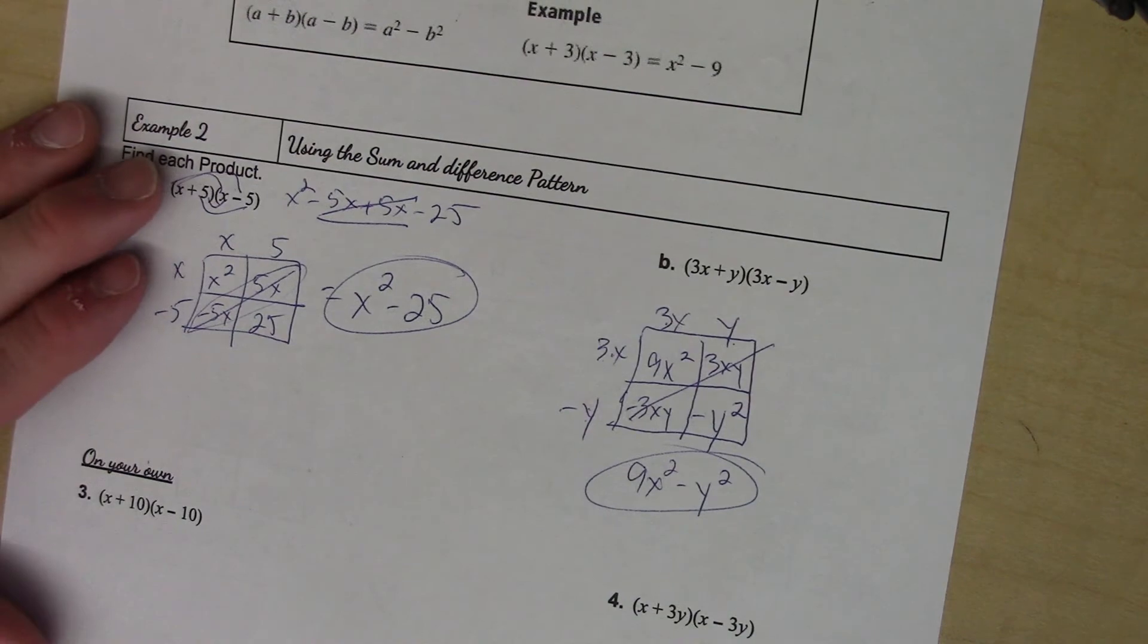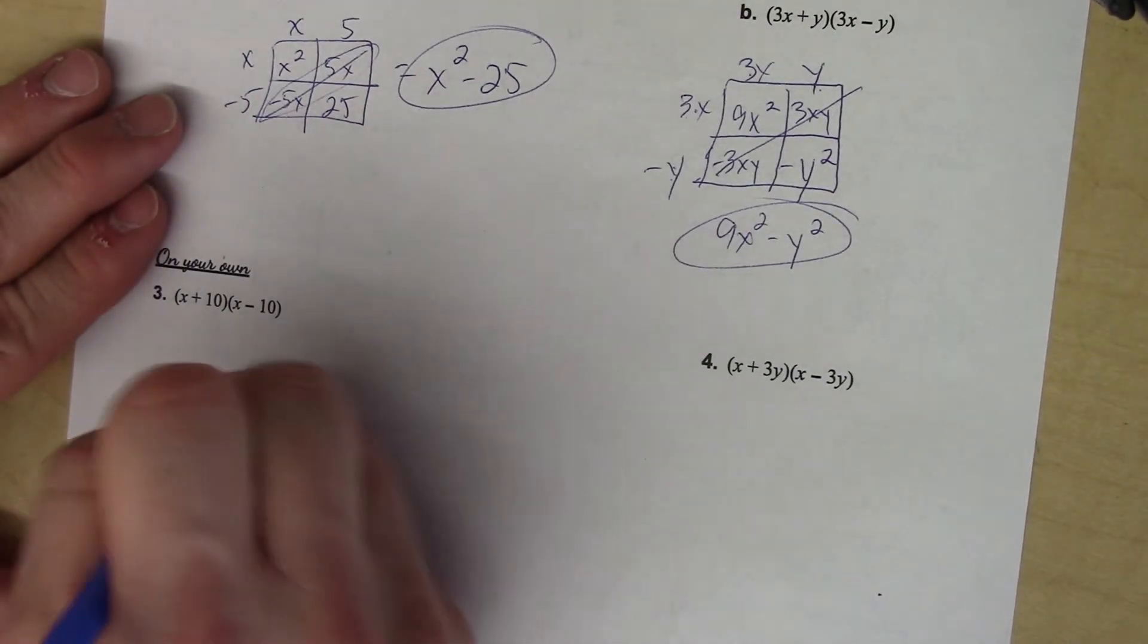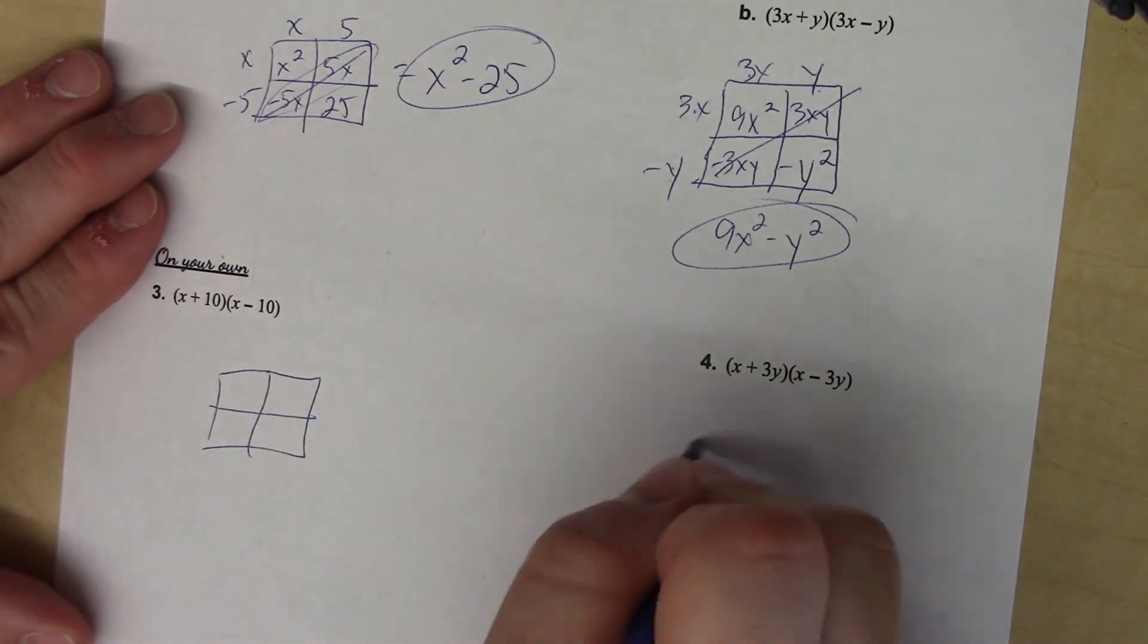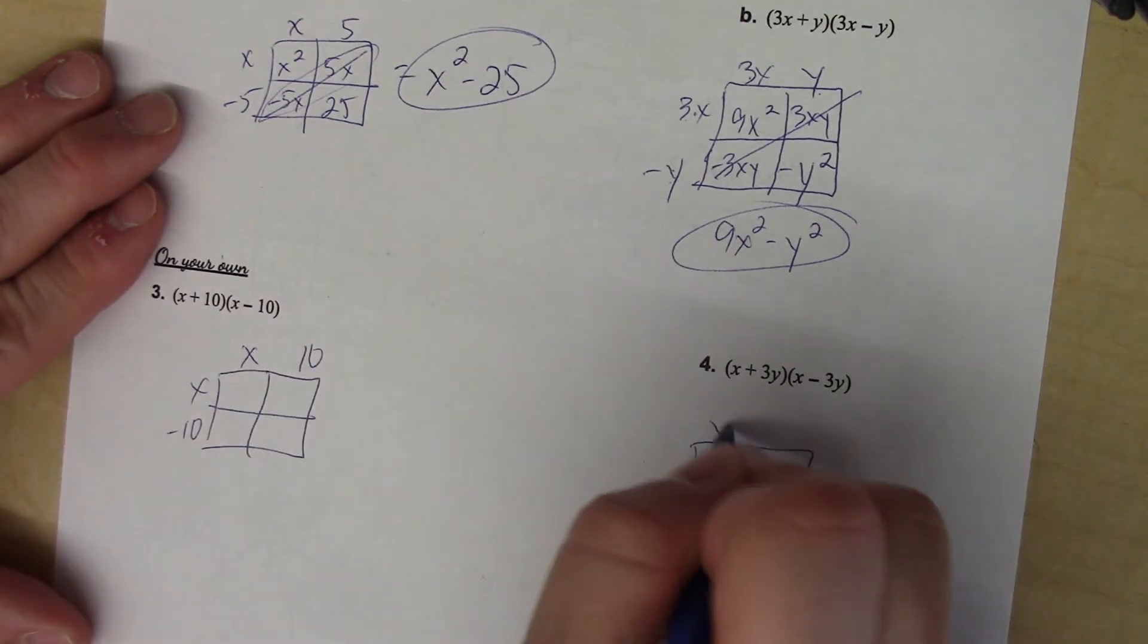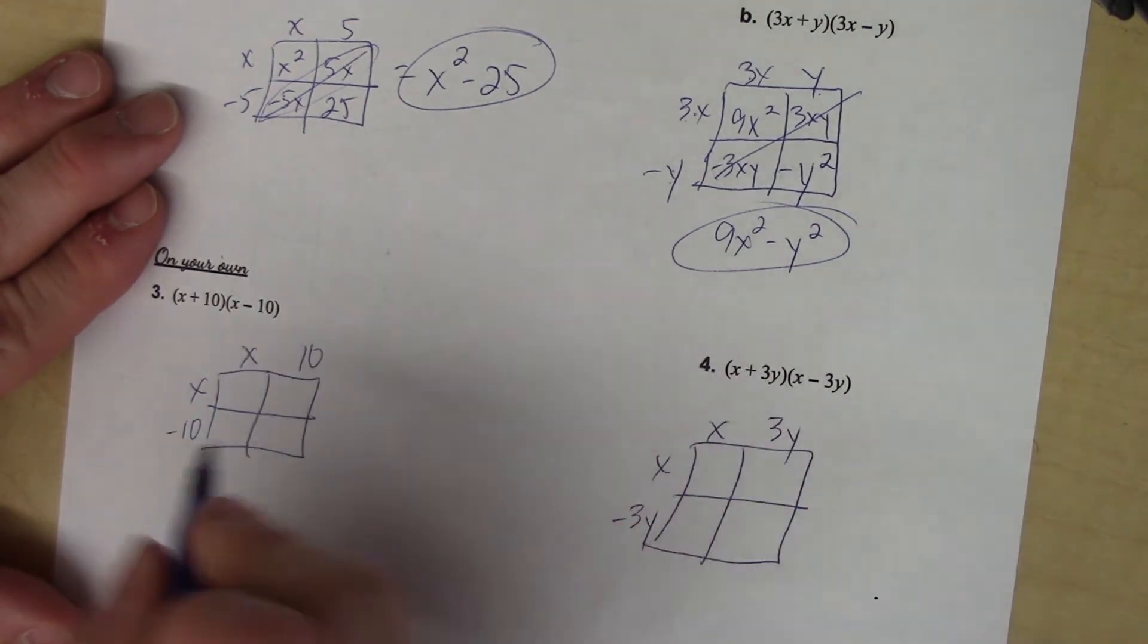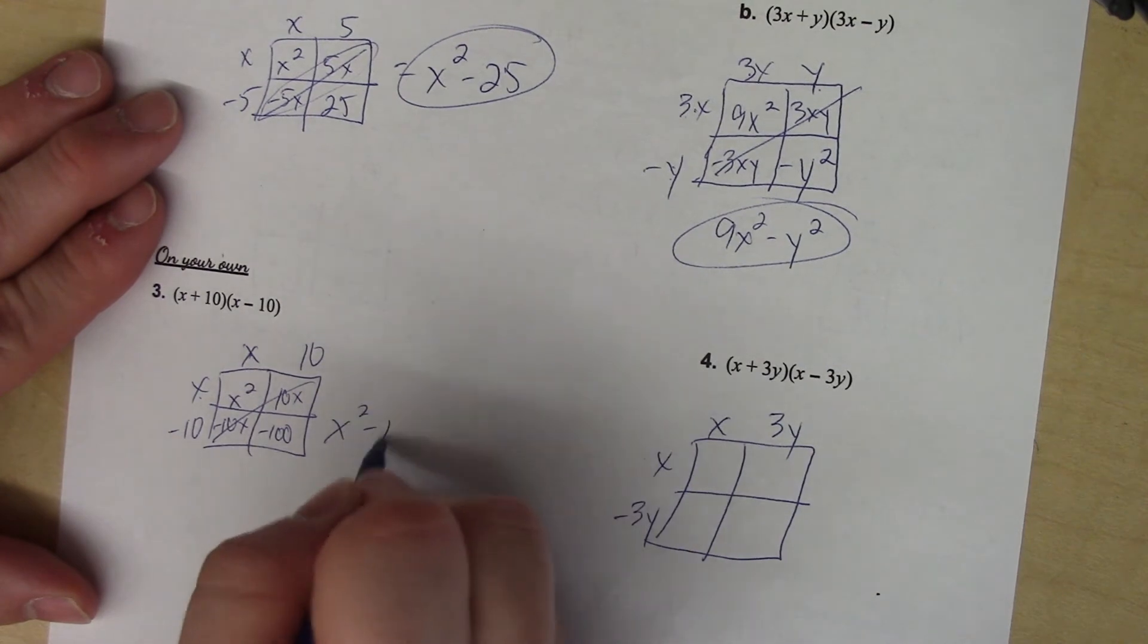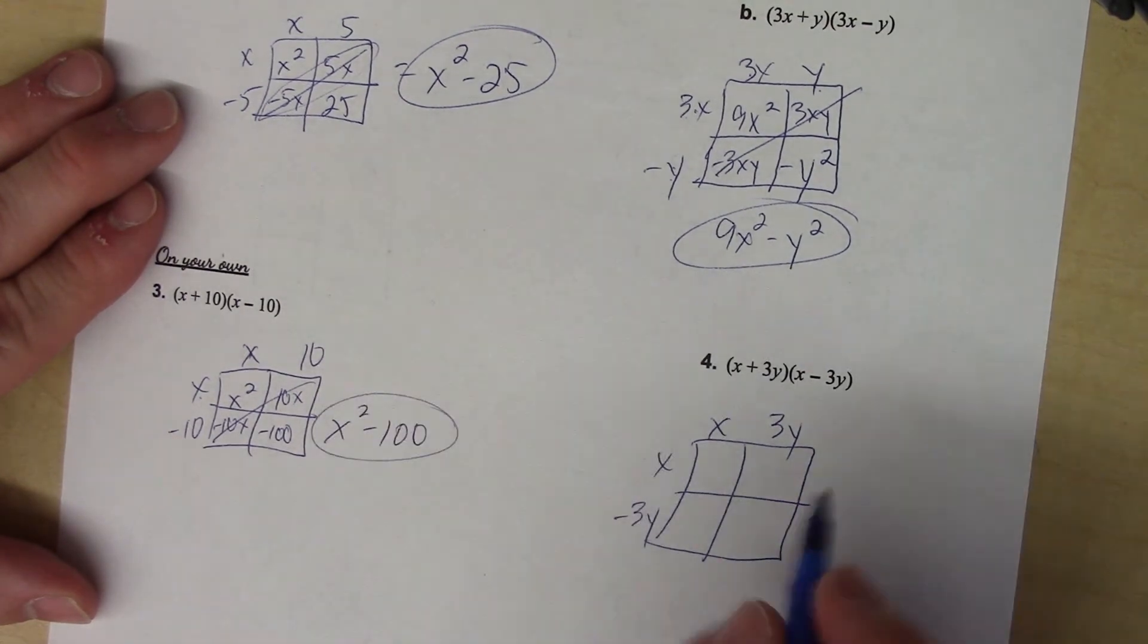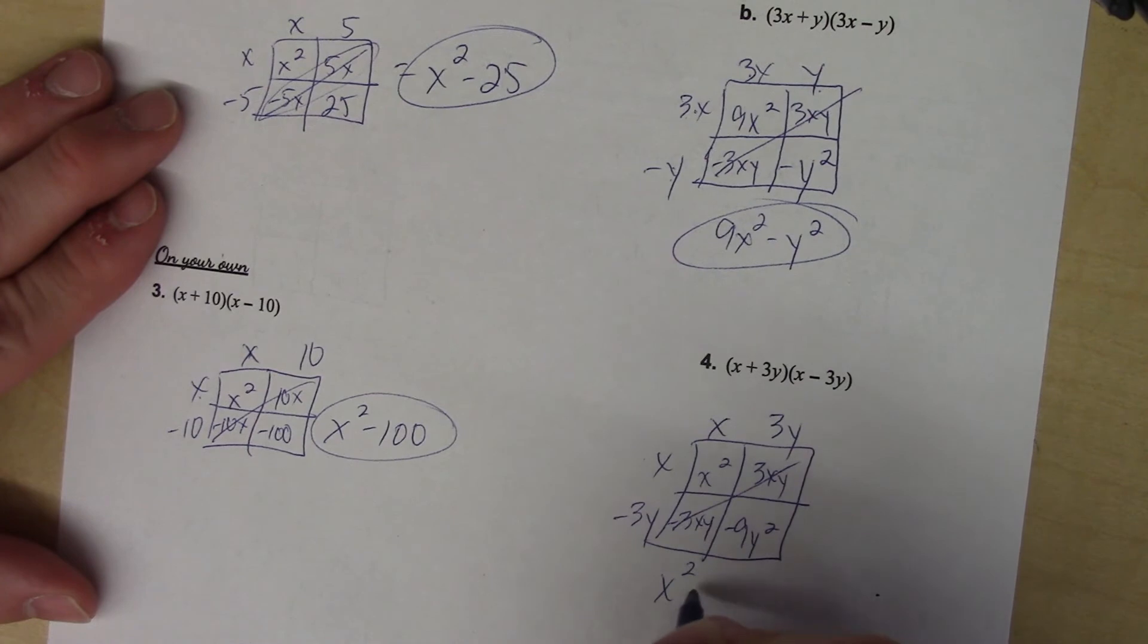Press pause, go try 3 and 4. Alright, x times x is x², 10x, -10x, and -100. Again, those cancel: x² - 100. x², 3xy, -3xy, and -9y². Those cancel, there's my answer.